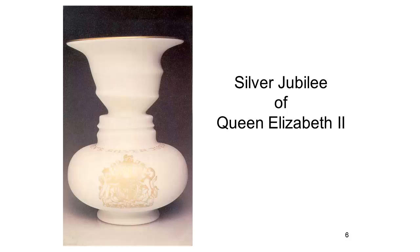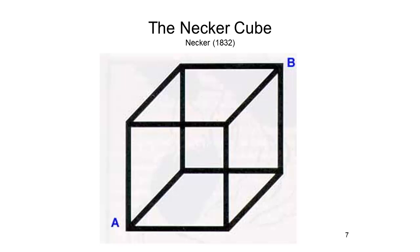Here's a real-life version of Rubin's Vase — a porcelain vase commissioned to celebrate the Silver Jubilee, or the 25th anniversary, of the accession of Queen Elizabeth II to the British throne. There is the vase with the royal seal in gold, and you can see on the right the profile of Queen Elizabeth, and on the left the profile of Prince Philip, the prince consort.